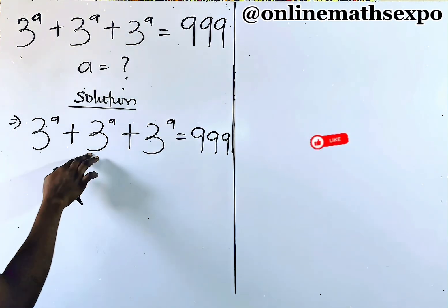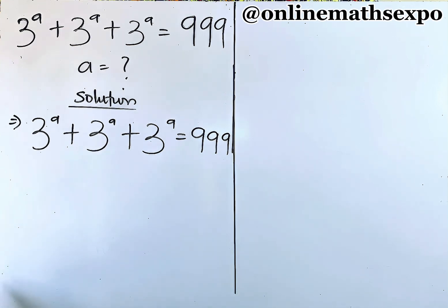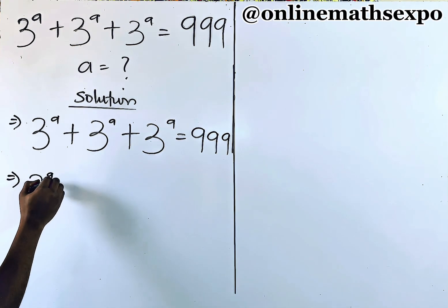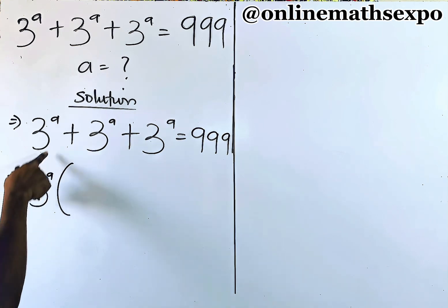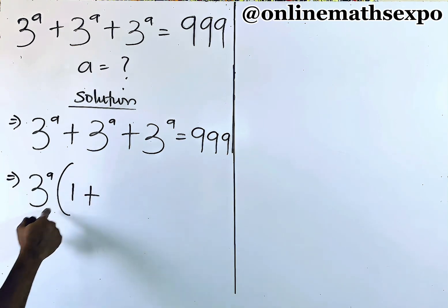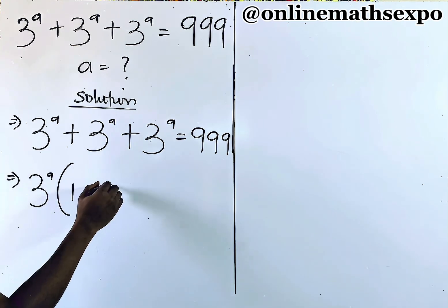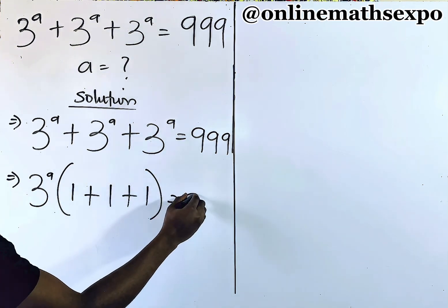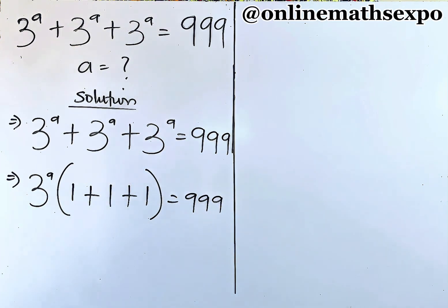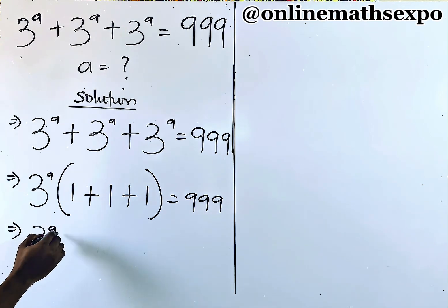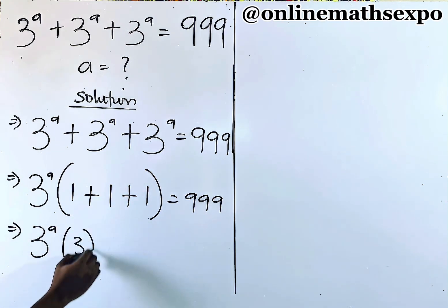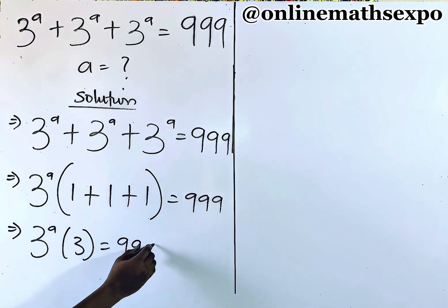Now you observe that this is repeated, so factor it out. That gives us 3 to the power of a, open a bracket. Using this to divide each term gives you 1 plus 1 plus 1, which equals 3, and that is equal to 999.